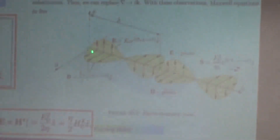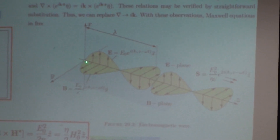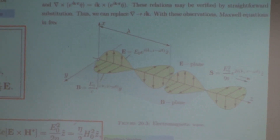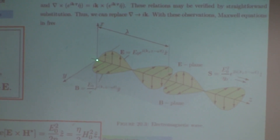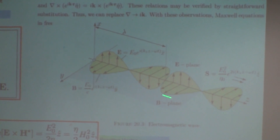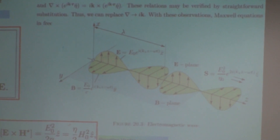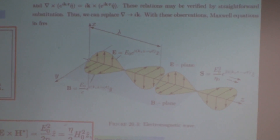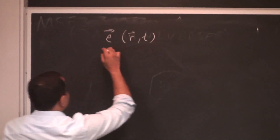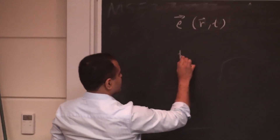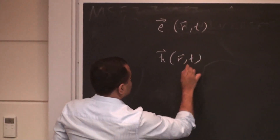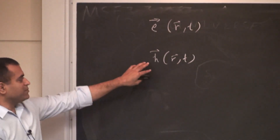If you sit at any point in space and track the electric field, it oscillates up and down. If you move along the axis at a frozen snapshot in time, it's also oscillating. So it's a space-time oscillation and both variables must be present. Maxwell's equations are written in terms of this electric field and the magnetic field, where B equals mu times H — B is the magnetic field in Tesla and H is the magnetic field intensity.